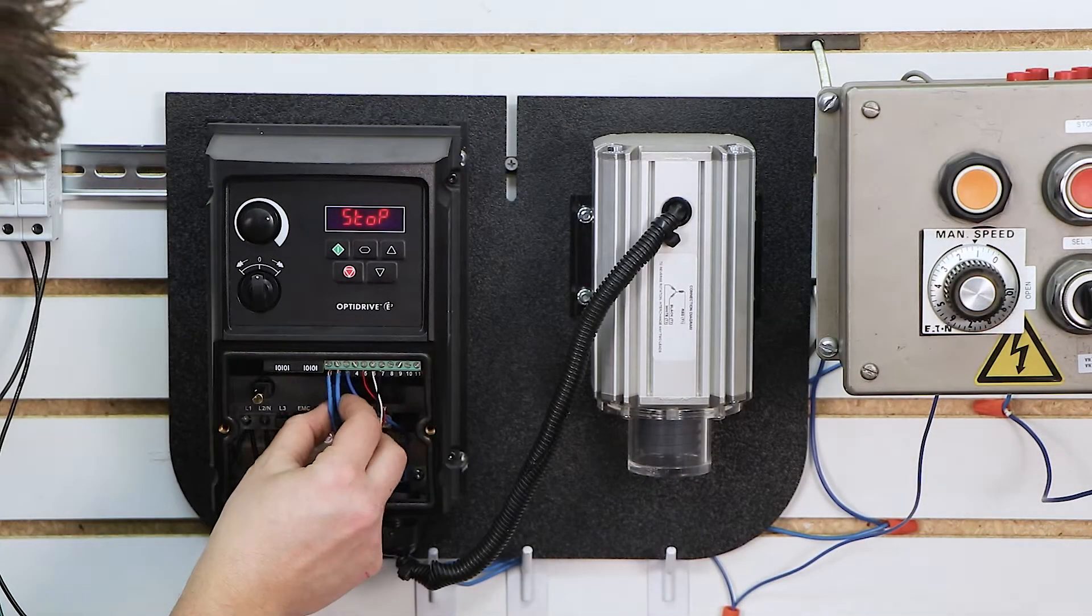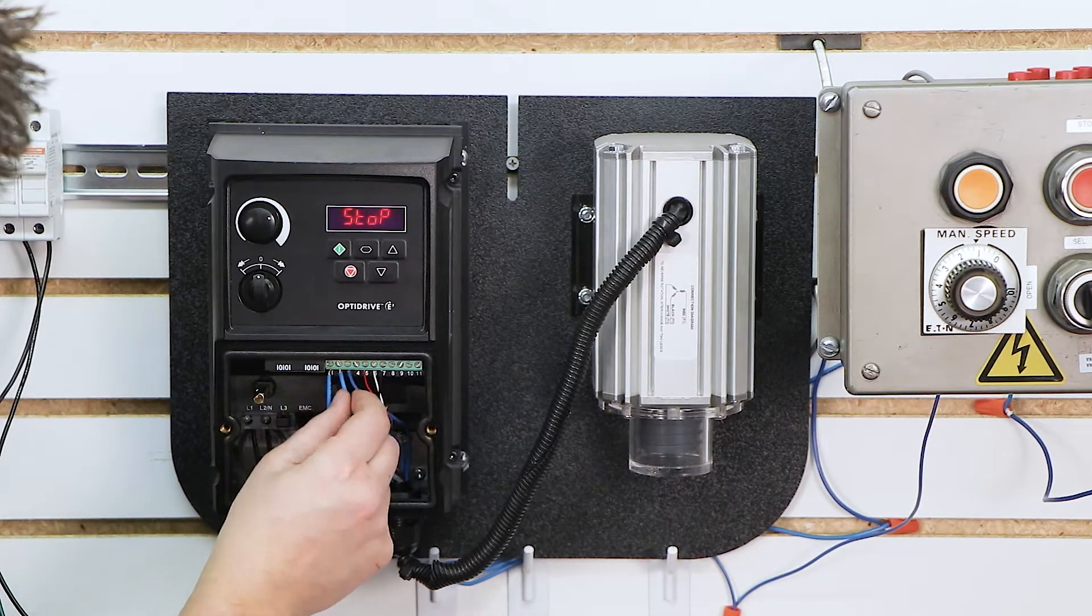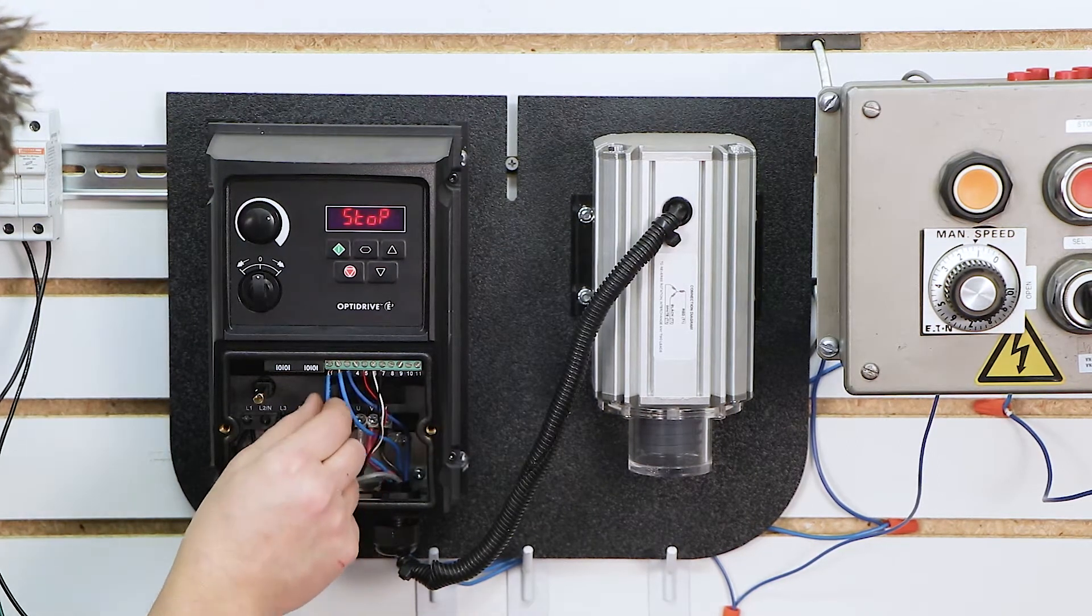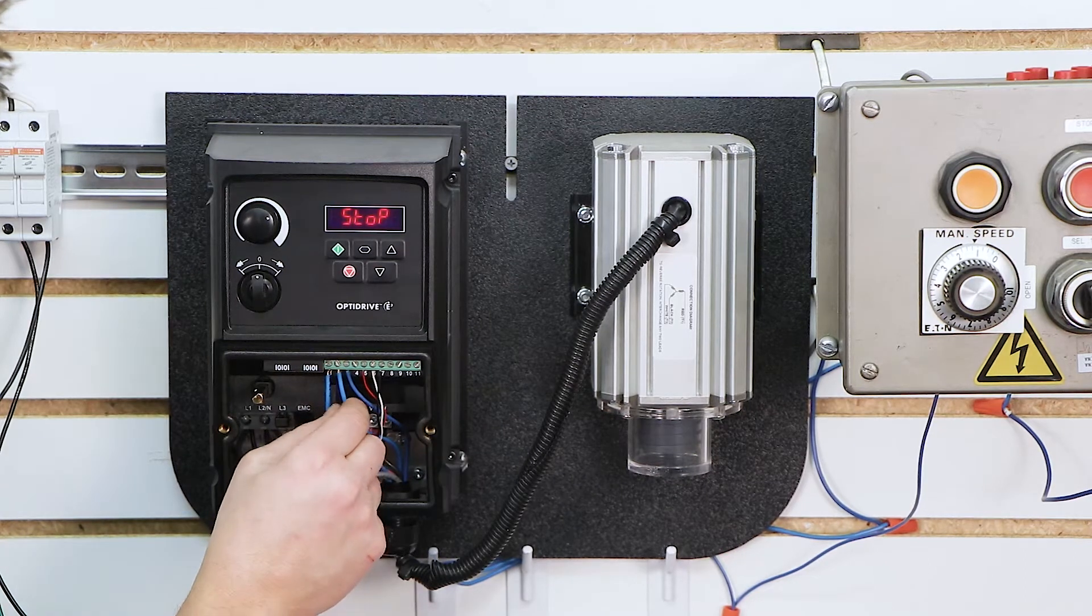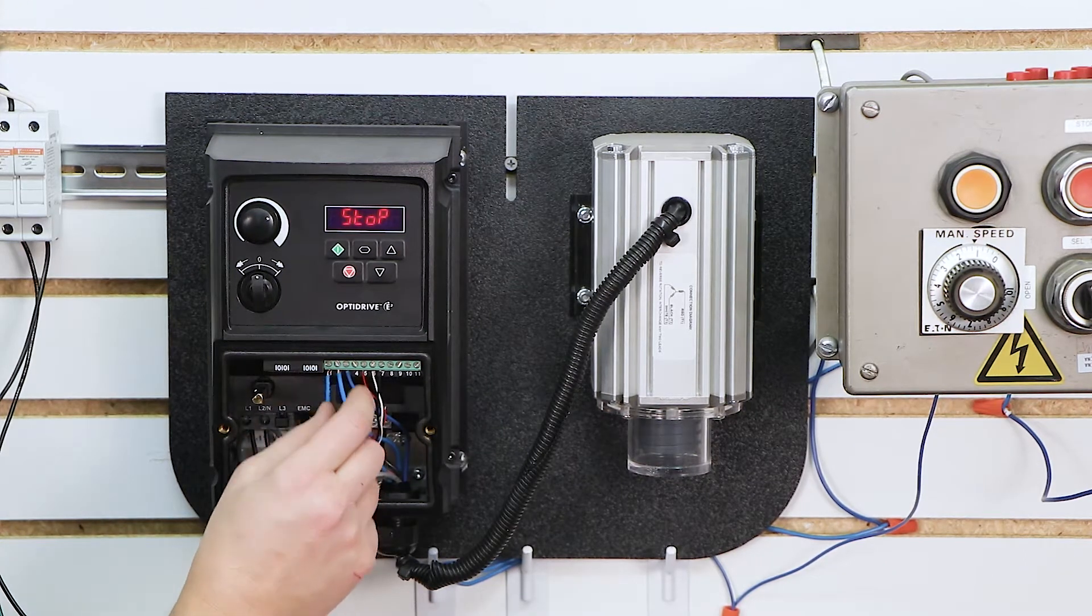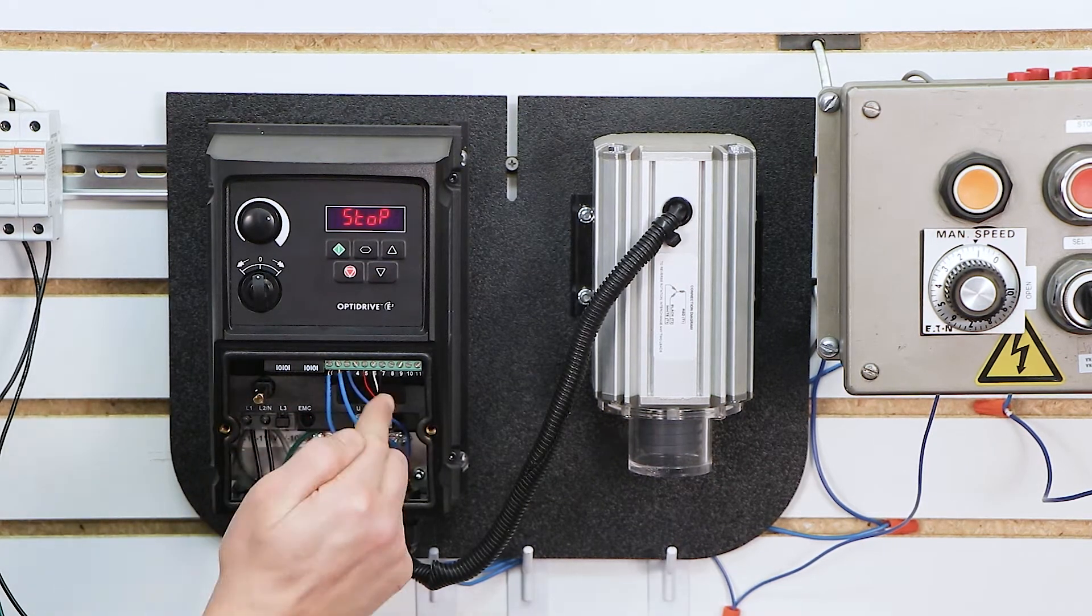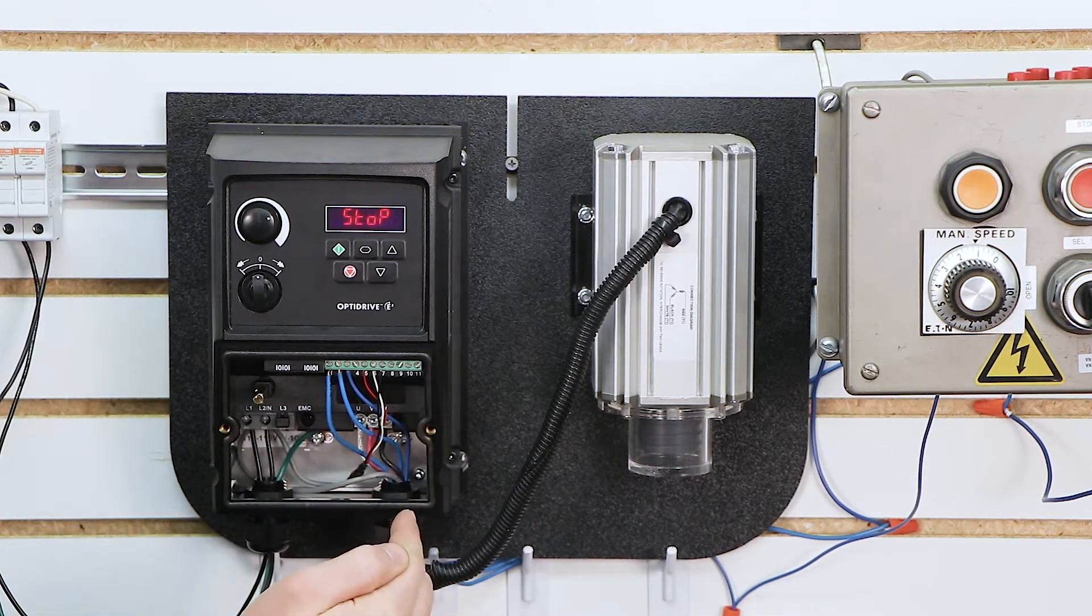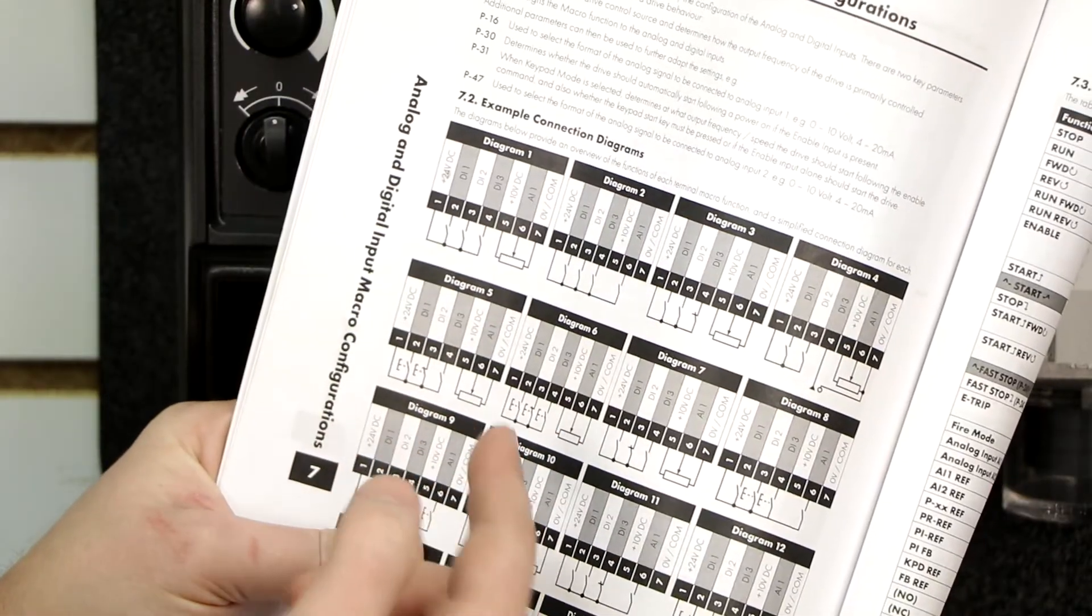So what I did is I've got my digital input 2 going into one side of my push button, digital input 1, which is plus 24 volts, going into the other side of my start push button, and then the contacts on the back of that start push button are normally open. That means that voltage doesn't flow until I press the button down.